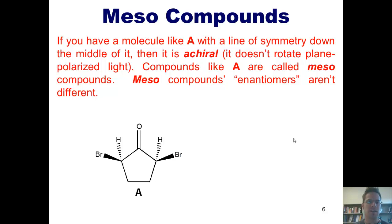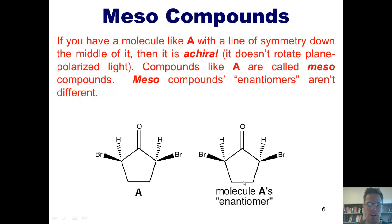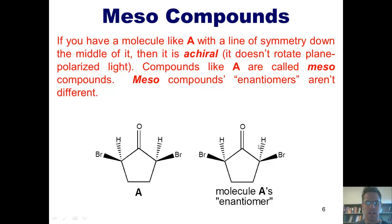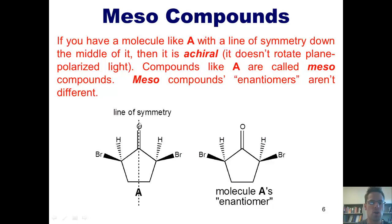Meso compounds and their enantiomers actually aren't different. If I were to take compound A and draw what looks like its mirror image — that is, its enantiomer — you'll notice that its mirror image looks exactly the same as compound A itself. An enantiomer is a non-superimposable mirror image molecule. Is this enantiomer non-superimposable? Absolutely not. You could take this mirror image and lay it down right on top of molecule A, and everything would line up exactly the same. The reason is because molecule A has a line of symmetry — you can draw a line directly down the middle of it, and everything on the left side is the mirror image of everything on the right side.